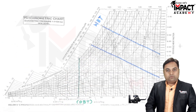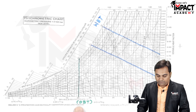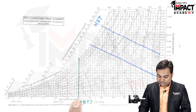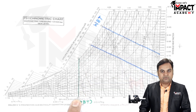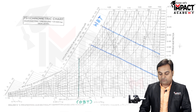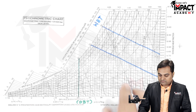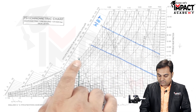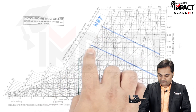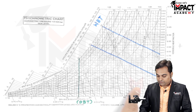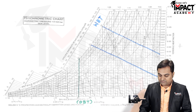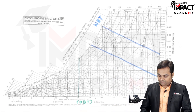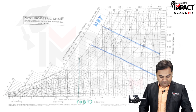The dry bulb temperature is projected vertically upward, and we can have any value of dry bulb temperature. Similarly, the wet bulb temperatures are shown by inclined lines — 30 degrees Celsius, 25 degrees Celsius, 20 degrees Celsius, and so on. Next, after the dry bulb temperature and wet bulb temperature, we have the specific volume of the air.